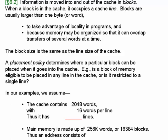Cache lines are where you put the blocks when they're in the cache, and the block size has to be the same as the line size. The placement policy determines where a particular block can be placed when it goes into the cache — for example, is a block of memory eligible to be placed in any line, or is it restricted to a single line? In virtual memory, a page can be placed in any page frame, and if that's the case with the cache we'd have a fully associative cache, but those are very expensive. More likely, there is a very restricted set of lines where we can place the block.